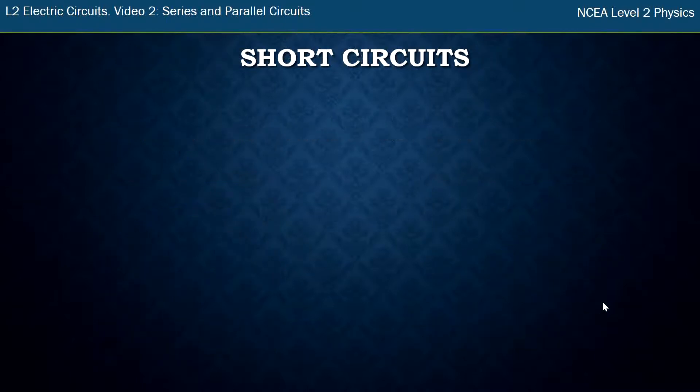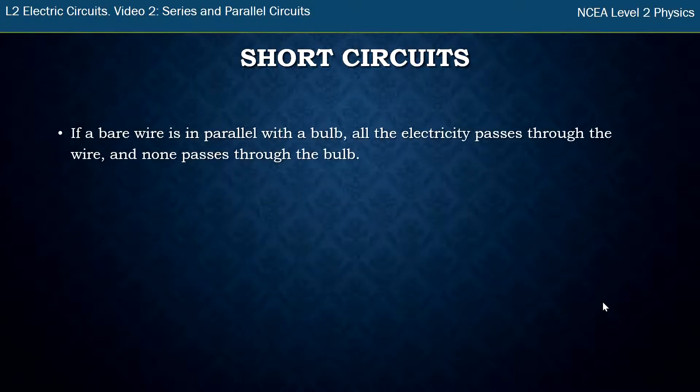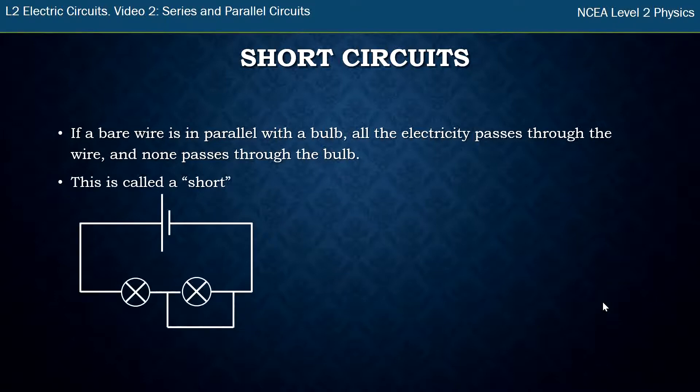The last thing we're going to talk about is short circuit. So a short circuit is when you get just bare wire and it's in parallel with a bulb. And what happens is all the electricity passes through that wire. We'll talk about why that does it in future videos, but basically no electricity passes through the bulb. So what do I mean by that? I've got this circuit here and here's my short. I have a parallel section of wire going around this bulb. So all the electricity flows around that bulb and none goes through that bulb. So that's equivalent to a one bulb circuit because this bulb does not light up at all.